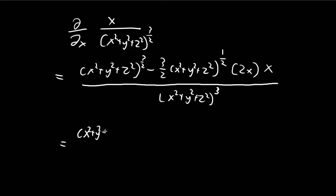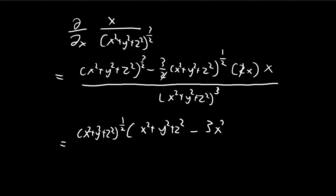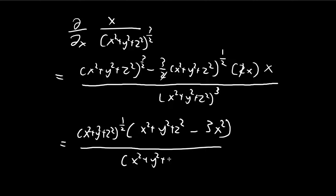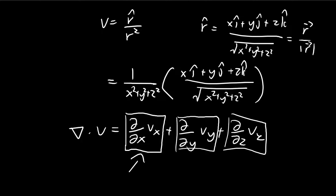In the numerator, I can factor out a common term, and we're left with (x squared plus y squared plus z squared) minus 3x squared, over (x squared plus y squared plus z squared) to the power of 3. So this is the derivative of the x component, giving us (x squared plus y squared plus z squared minus 3x squared) in the numerator.